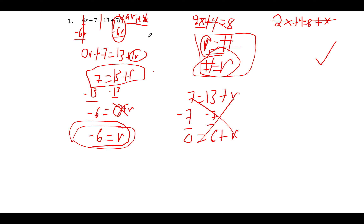We have 6r plus 7 equals 13 plus 7r. The first inverse operation we're going to perform is to subtract 6r from both sides of the equation. That gives us 0r plus 7 equals 13 plus 1r. We've removed 6r, which cancels to 0, and 7r minus 6r equals r, so we get 7 equals 13 plus r.